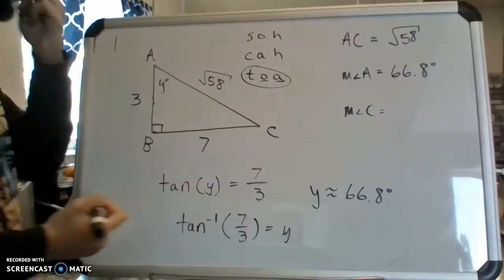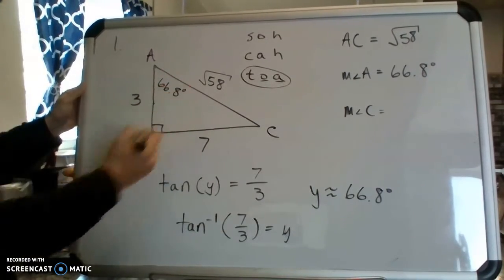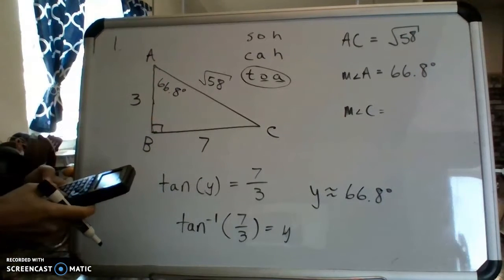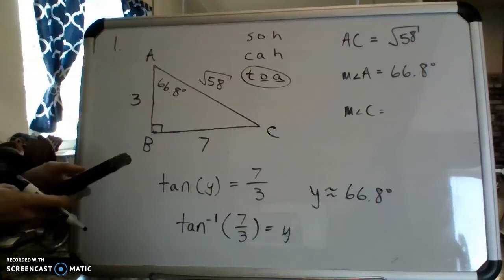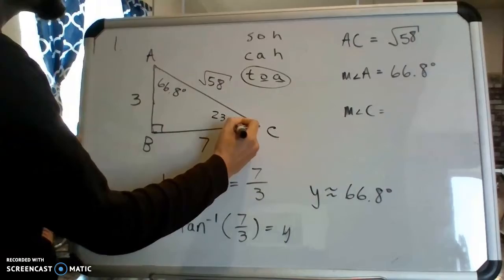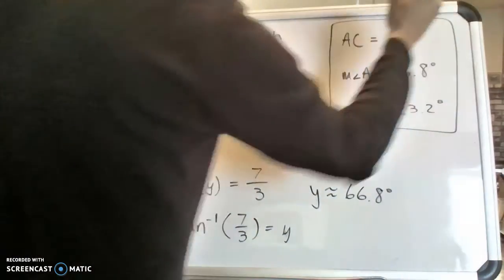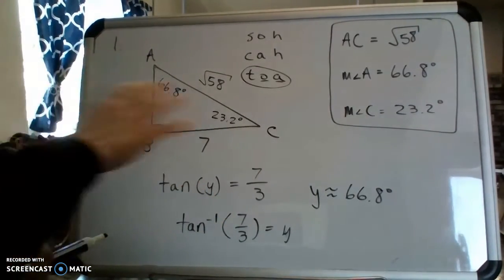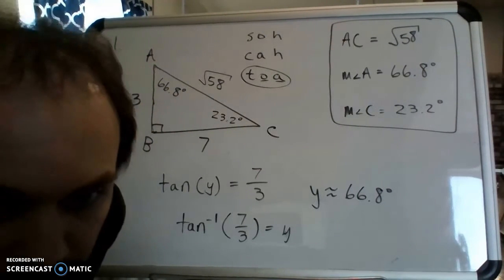Once we know that angle A is 66.8 degrees, solving angle C is easy. We just add these two up and subtract it from 180. So 90 plus 66.8, and then do 180 subtract that amount. And that comes out to be 23.2 degrees. So there's your three answers for question number four. We're going to move on to the next few examples. I'm going to pause the video so that I can reset my board here.